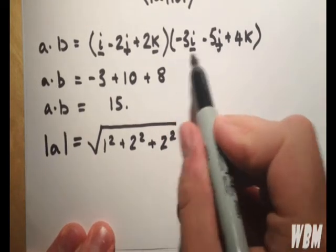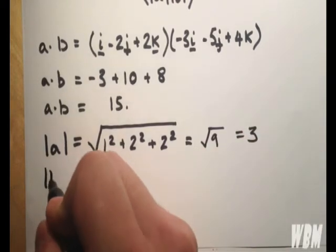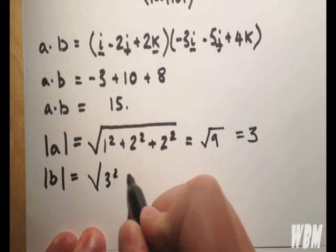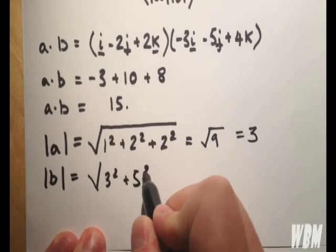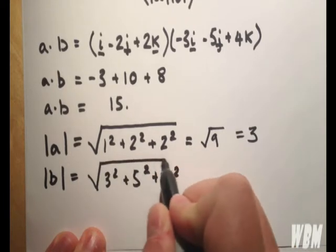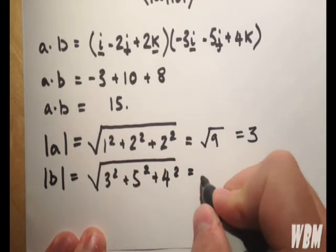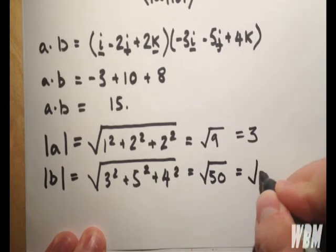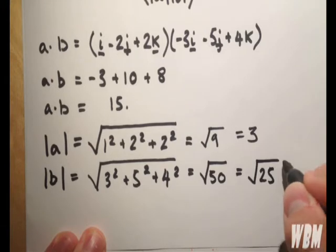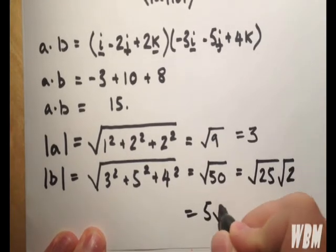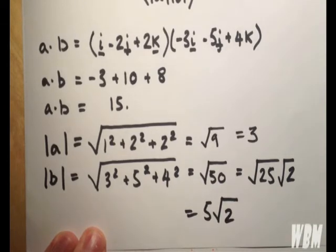And similarly for b, which we can simplify a little. That's 5 root 2.